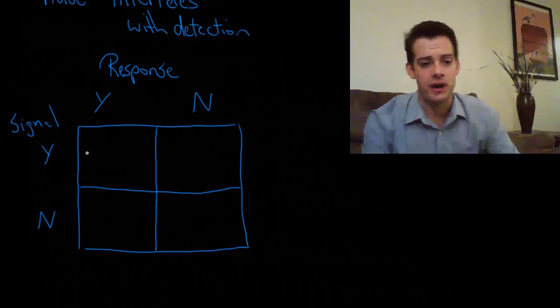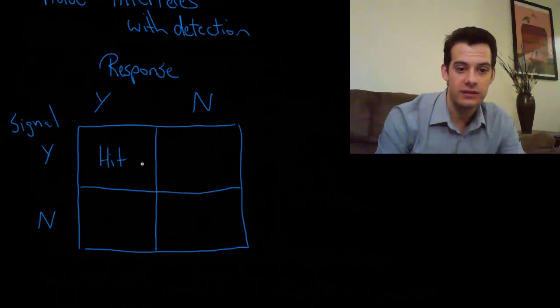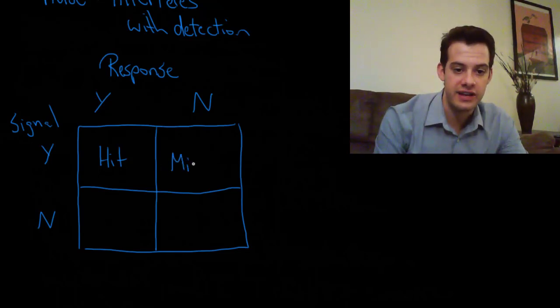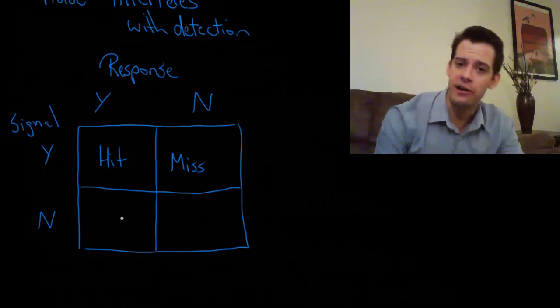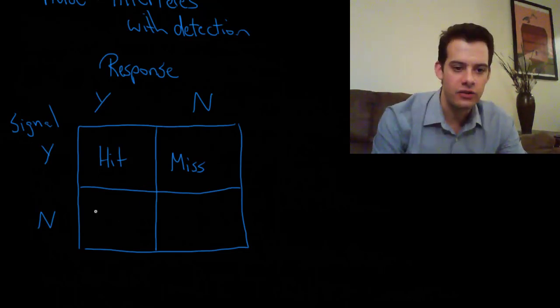The first possible outcome is I play the sound and you say I heard that. We call that a hit. Another thing that's possible is I play the sound but you don't say that you heard it. And that would be a miss. There's a signal present but you don't detect it. The other thing that could happen is I don't play a sound and you say I heard that but there actually wasn't a sound that you were supposed to hear. So in this case we call that a false alarm.